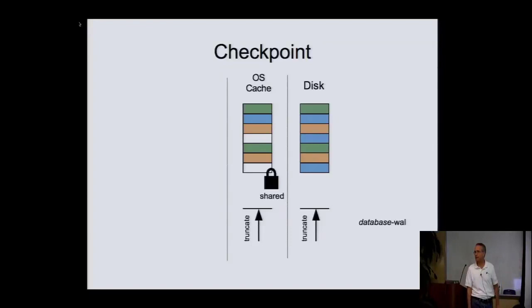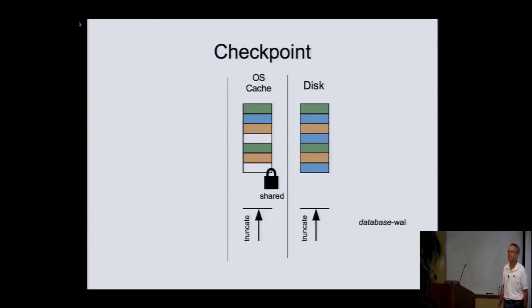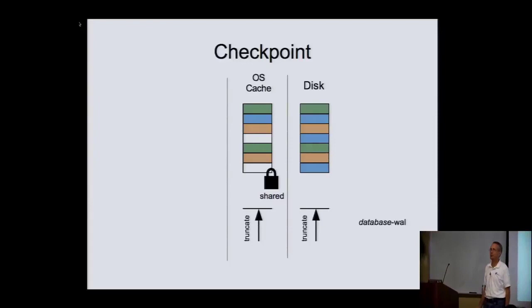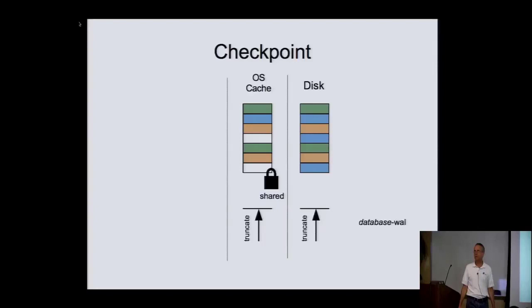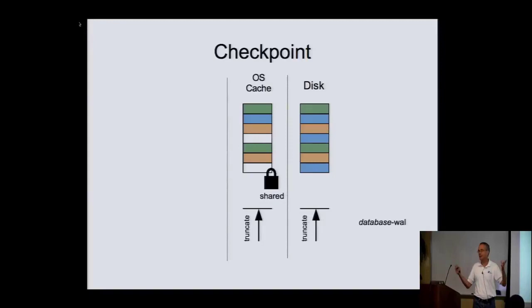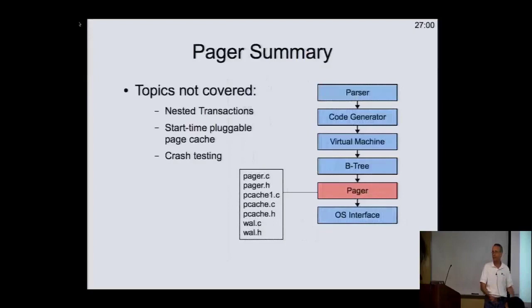The question is how we handle multiple computers reading the same database file over NFS. Your network file system has to support POSIX advisory locking or the Windows equivalent, and if it doesn't — a lot of them don't — you run the risk of some corruption. The locking is POSIX advisory locking. We also have a pluggable OS layer, and there's a different OS layer that substitutes creating dot-lock files in place of POSIX advisory locking, but that's heavier, slower, and if you crash in the middle, the lock doesn't automatically go away.